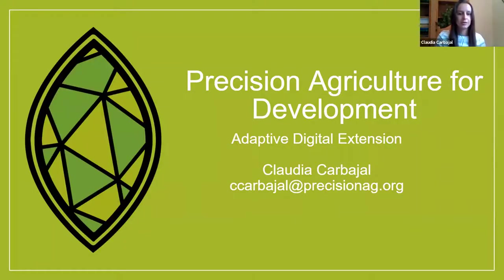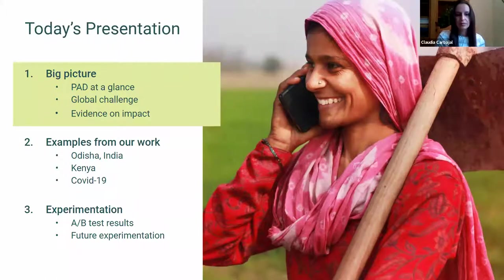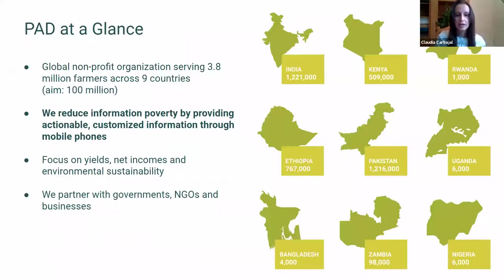My presentation is divided into two big sections. The first is a big picture talking about the organization, what we do, and our model. The second is more in depth into some of our programs — our biggest program in Odisha, India, a program in Kenya, and our work with COVID. The final section is about experimentation — some results from A/B testing and how we see experimentation in the future.